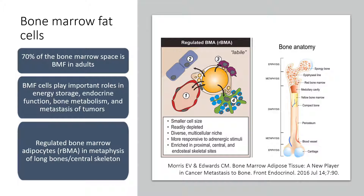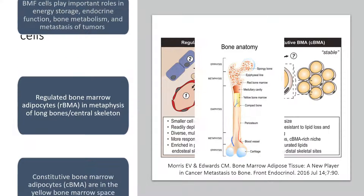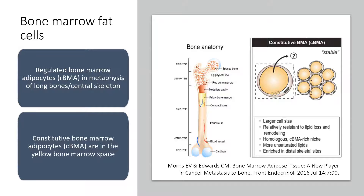Bone marrow fat is important, making up about 70% of the bone marrow space, and plays a role in energy storage, endocrine function, bone metabolism, and the metastasis process. There are two types of fat cells to consider: smaller fat cells found in metaphyses of long bones and in the central skeleton, which are metabolically active and involved in hematopoiesis and skeletal modeling; and yellow bone marrow fat cells, which are much larger and found in the shafts where there is relatively little hematopoiesis.